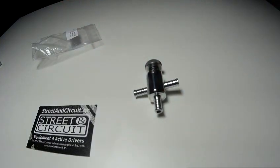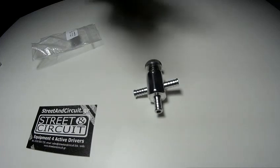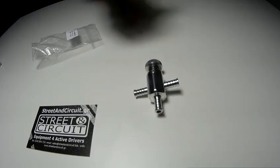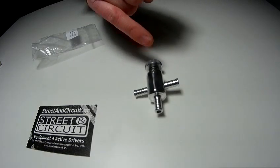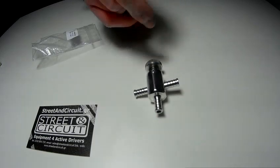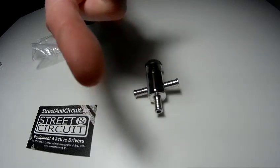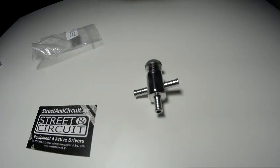So basically what does it do? It reduces the signal that's going to the wastegate. So if you want to increase the boost, you need to stop the wastegate from opening or opening so much so soon. So you use this valve to bleed some of the boost away so the wastegate sees less boost so it doesn't open so soon.